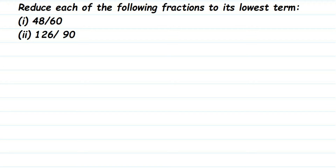The question is to reduce each of the following fractions to its lowest term. Reduce means we have to cancel it and bring the numbers to the smallest form. There are two ways of doing this — it is also called cancellation.